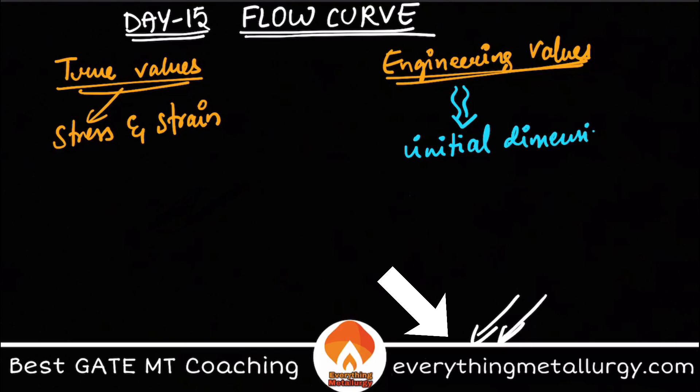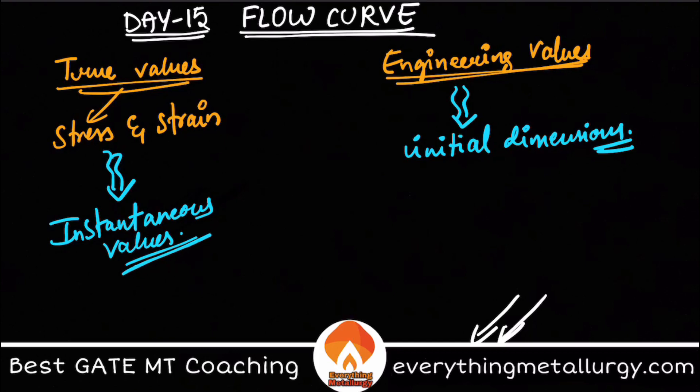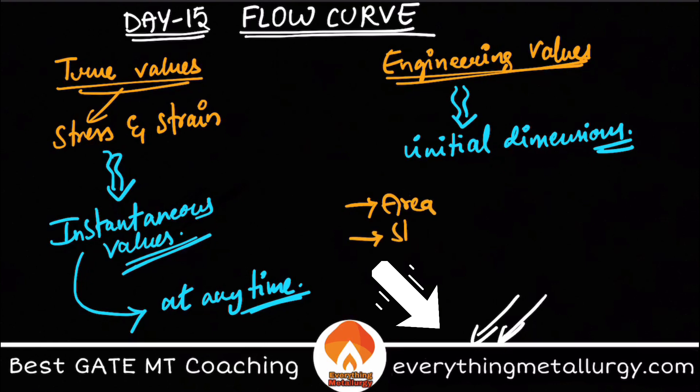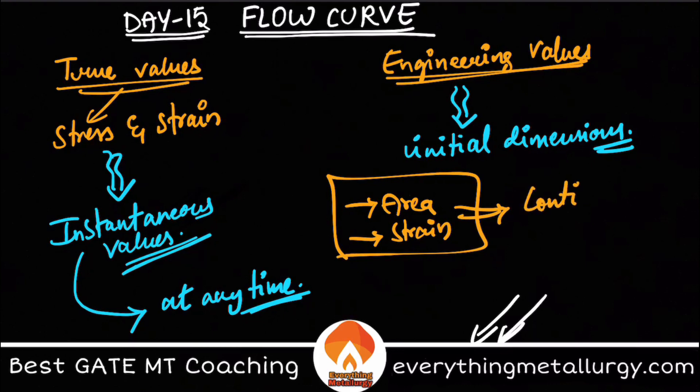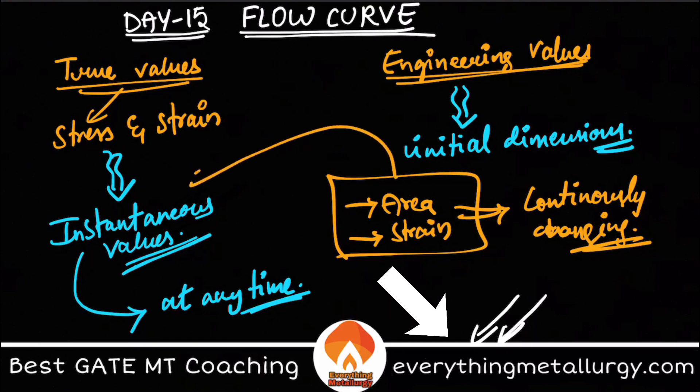That means the initial cross-section area, the initial length, and all the stuff. Whereas when we are talking about true values, we basically take instantaneous values. This instantaneous value gives me the stress or strain at any particular point of time. If you do a tensile test or compression test, the area of cross-section and the length are continuously changing throughout my testing time.